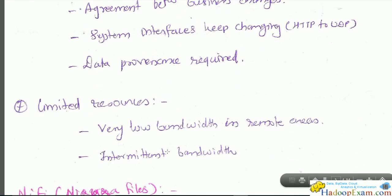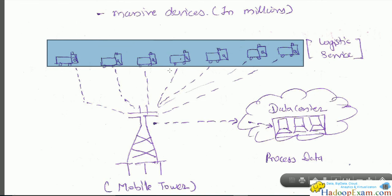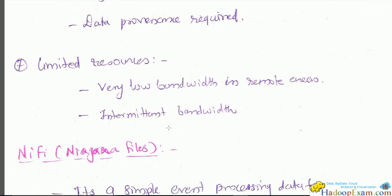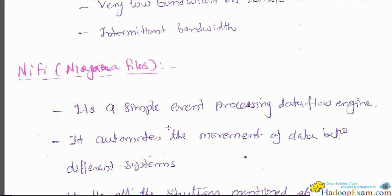Limited resources: very low bandwidth or intermittent bandwidth in remote access. Take the example of trucks running in a city — sometimes bandwidth is not available, giving intermittent signals. Intermittent data needs to be able to be sent and supported, and this is very well supported by NiFi. Data that is not received continuously — this kind of problem is also solved using NiFi. This covers all the data flow challenges.